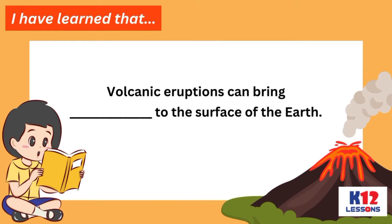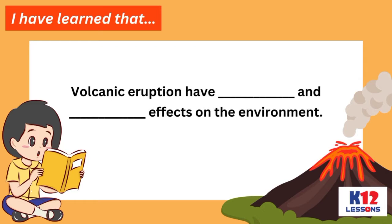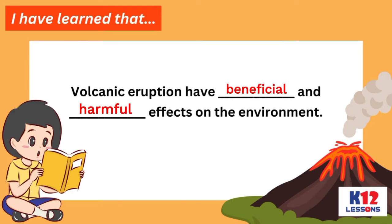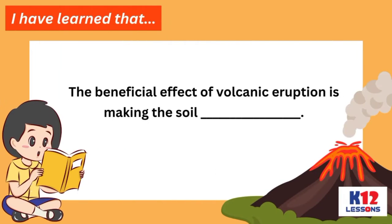Fill in the blanks with the correct answer. I have learned that volcanic eruptions can bring blank to the surface of the earth. Volcanic eruptions have blank and blank effects on the environment. The harmful effects of volcanic eruption are blank, blank, blank, blank, blank, and blank. The beneficial effect of volcanic eruption is making the soil blank.